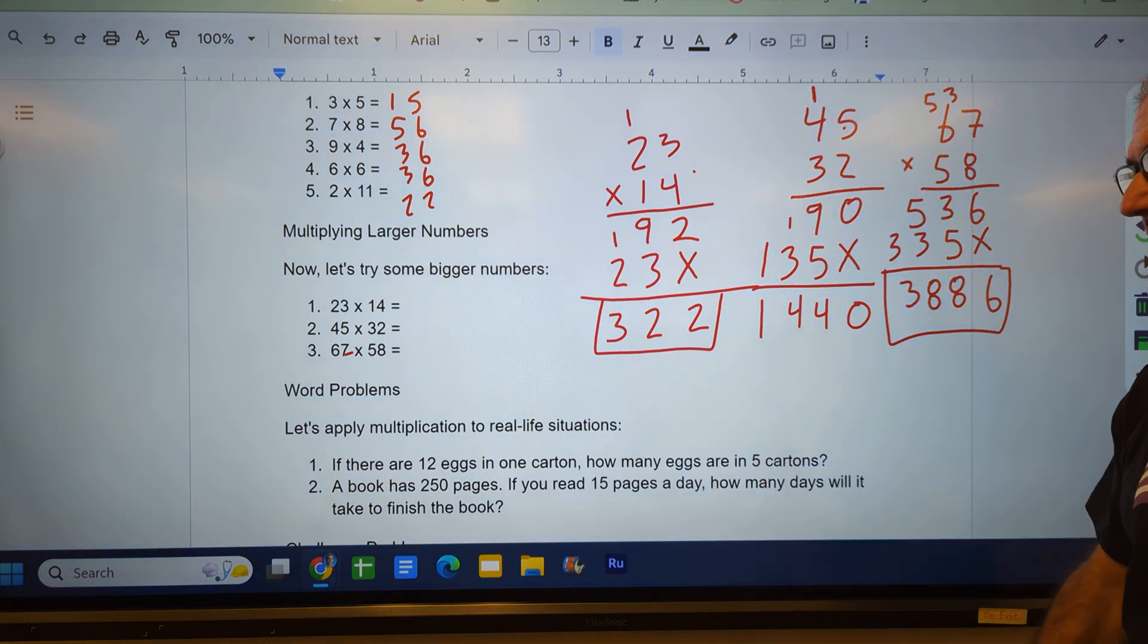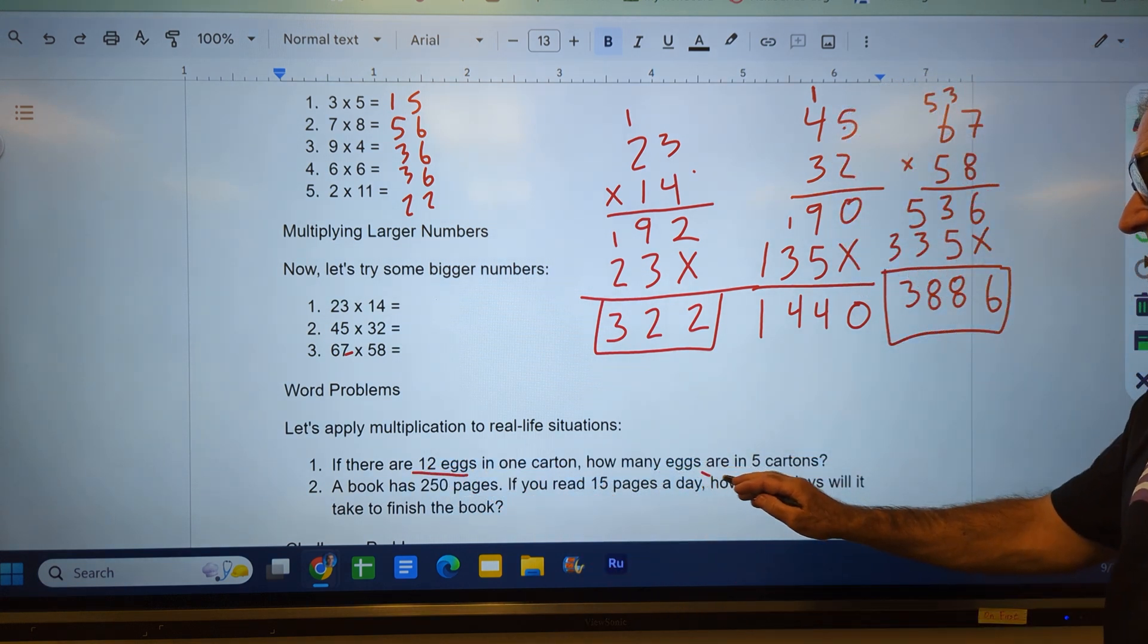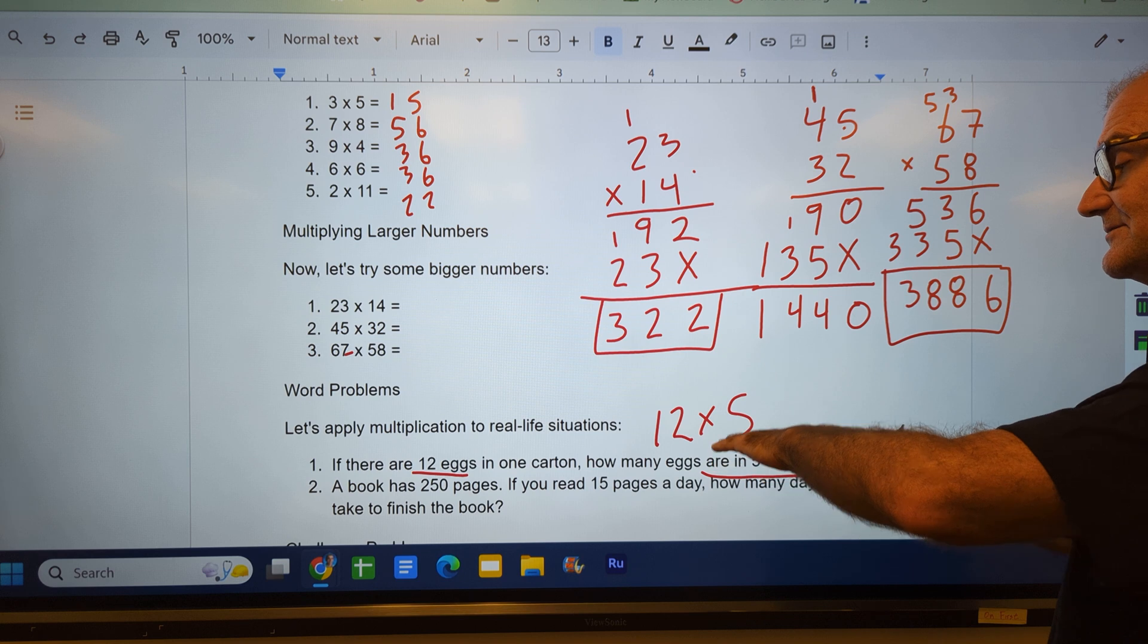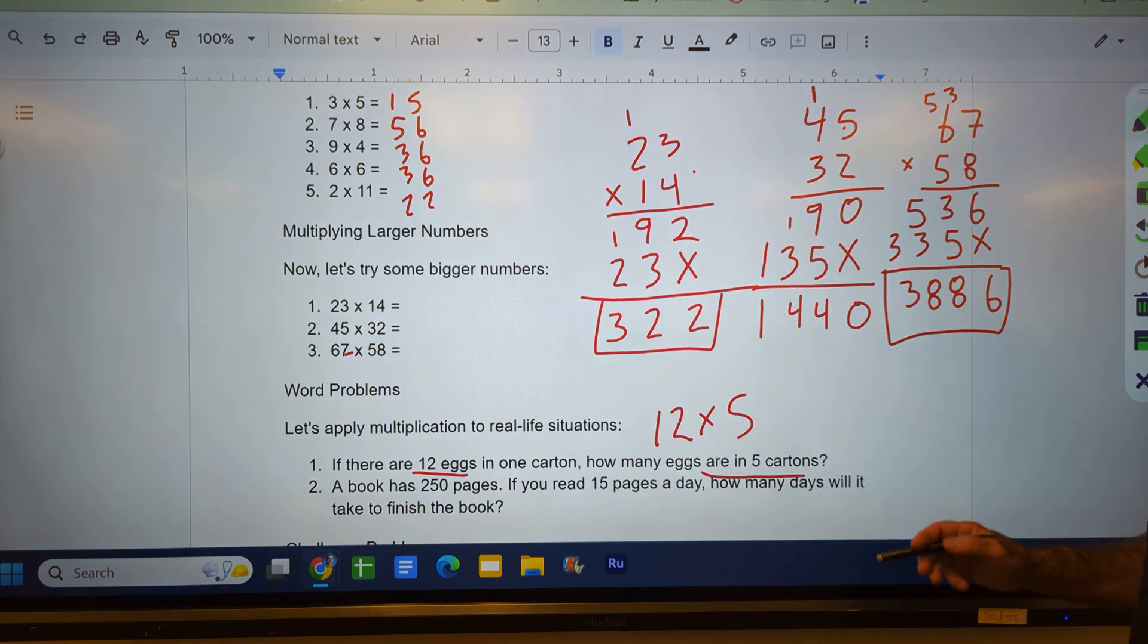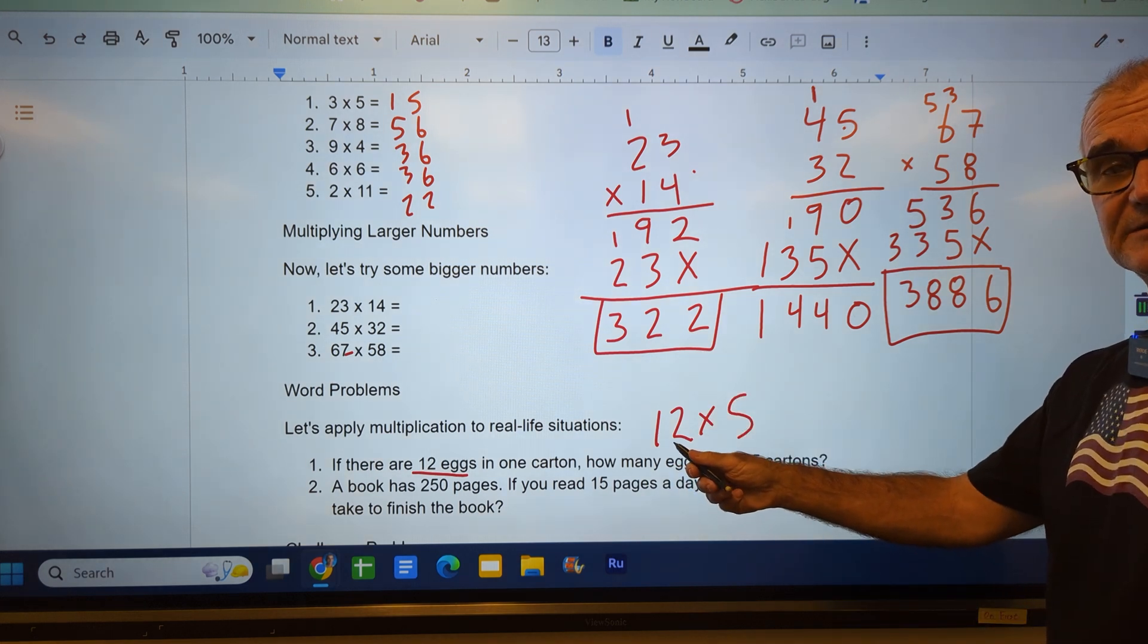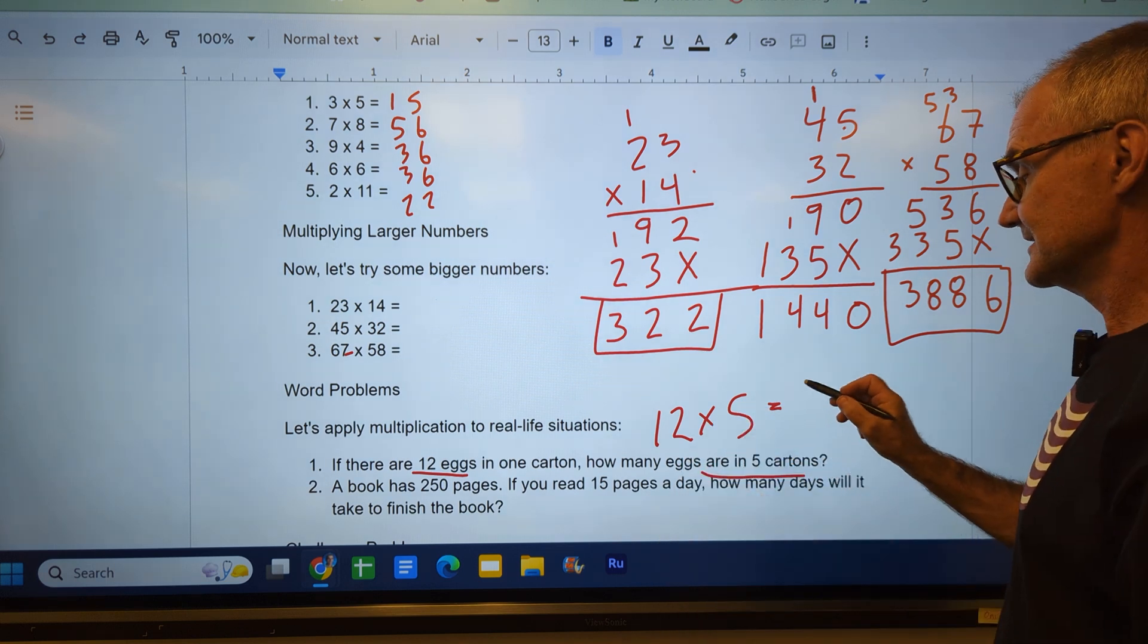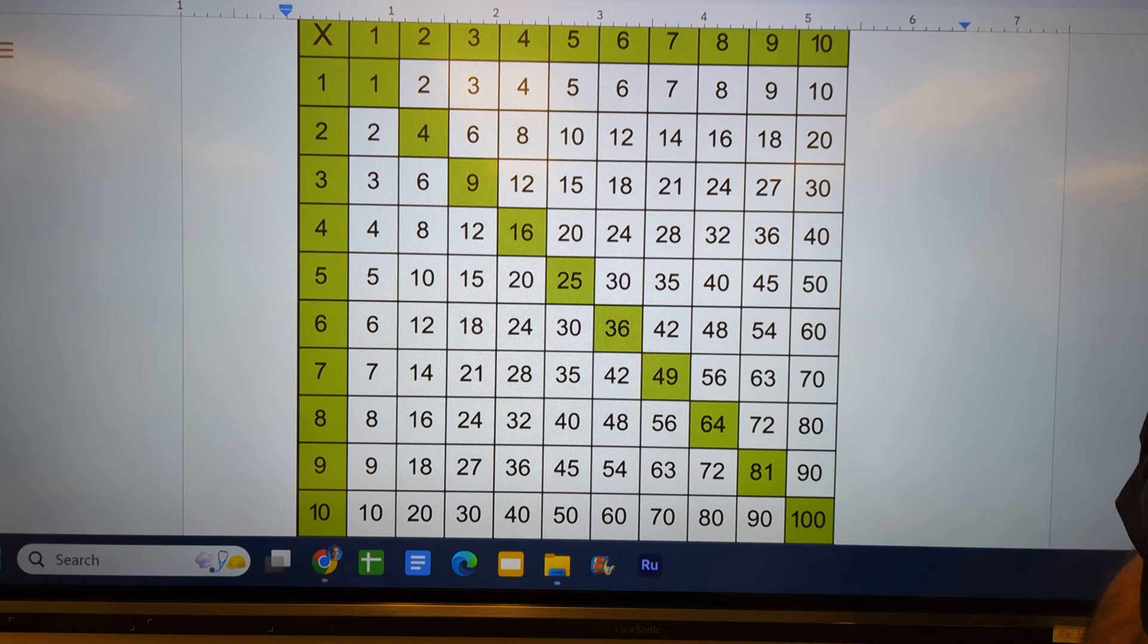Alright, let's go ahead and try a couple word problems. Number 1 right here: 12 eggs in 1 carton, how many eggs are in 5 cartons? So this is saying 12 times 5. It's saying I got 12 rows, I have 5 sets of 12 rows or 12 sets of 5 rows. It's not in our multiplication table, but I could go 5 times 10 is 50, 5 times 2 is 10. So 12 times 5 is that 50 and that 10 to give me 60.